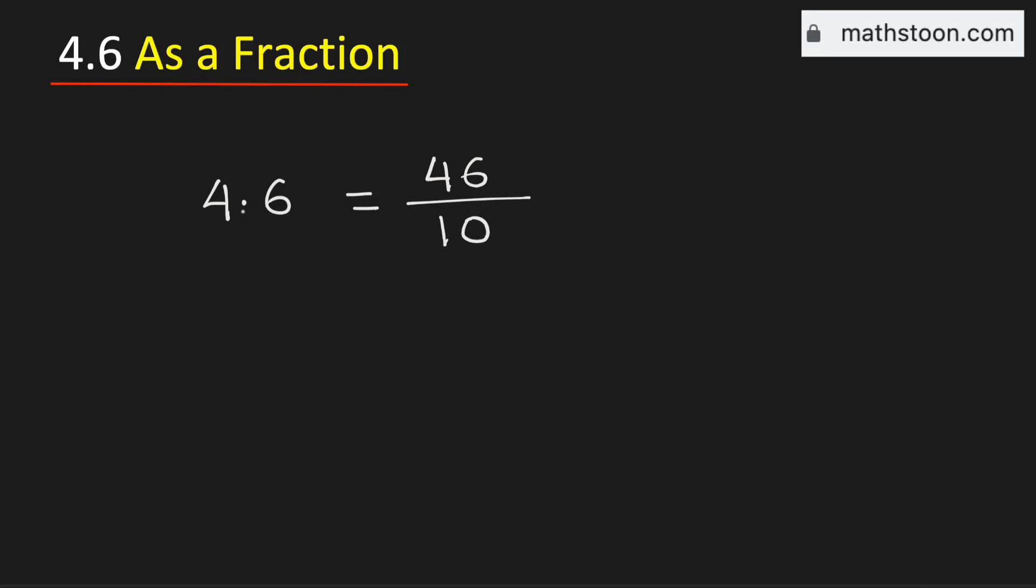Here we have put only one zero because there is only one digit after the decimal point. Now see that this fraction is not simplified, we will simplify it. Both the numbers are divisible by 2, so to simplify it we will divide them by 2.